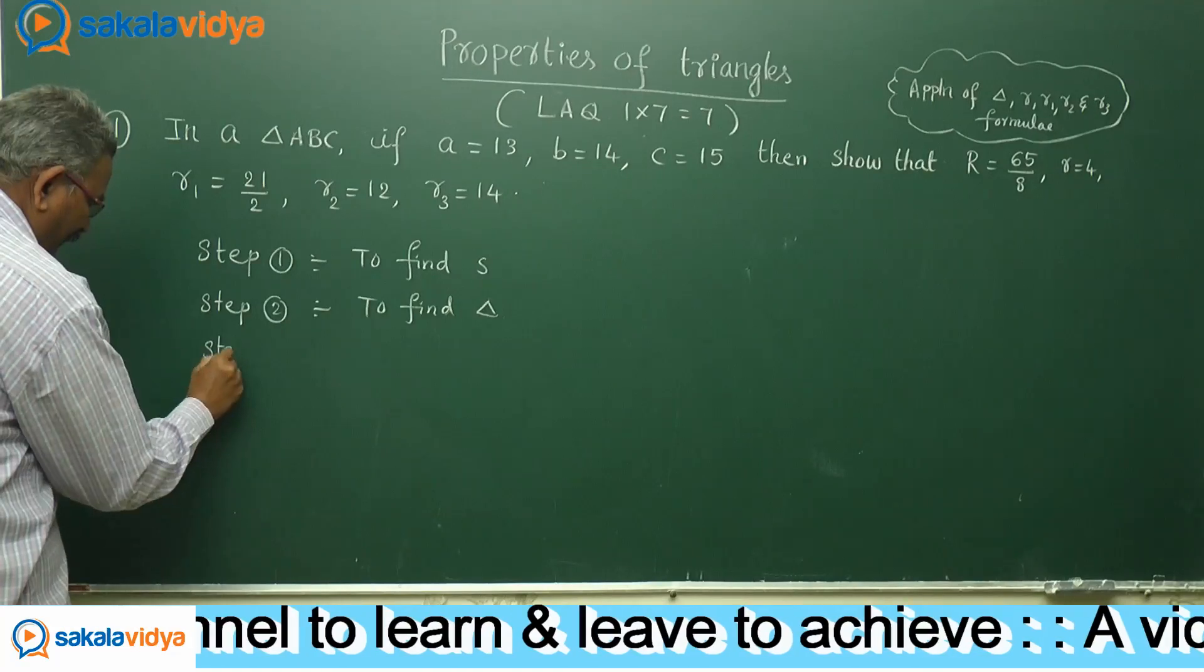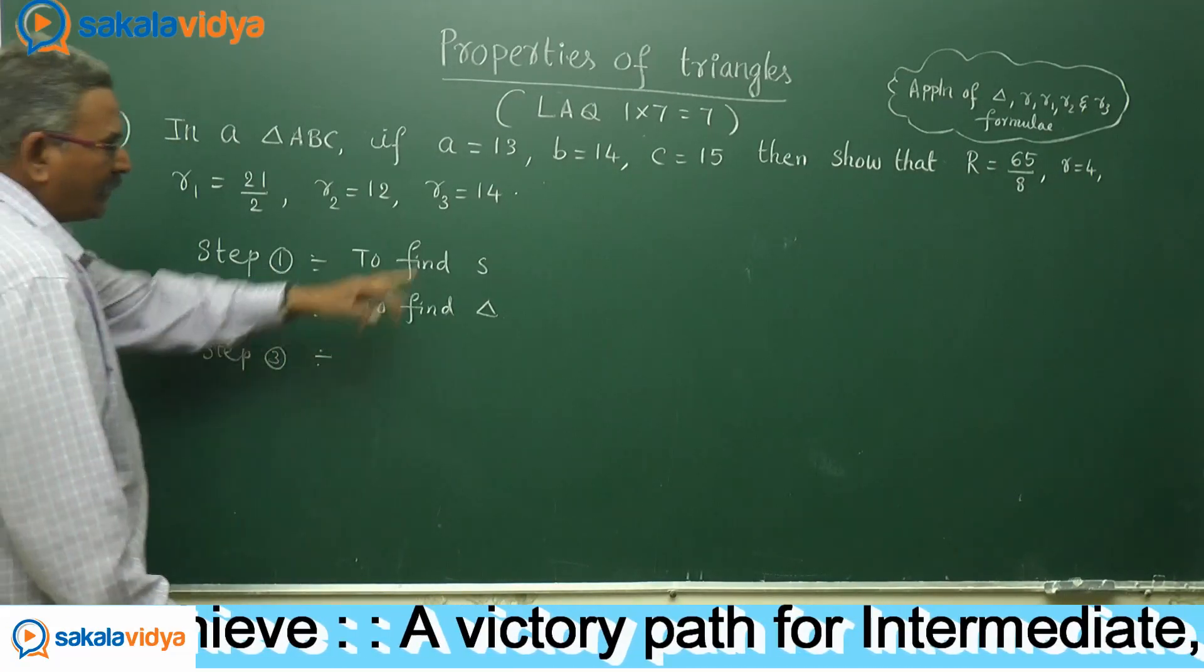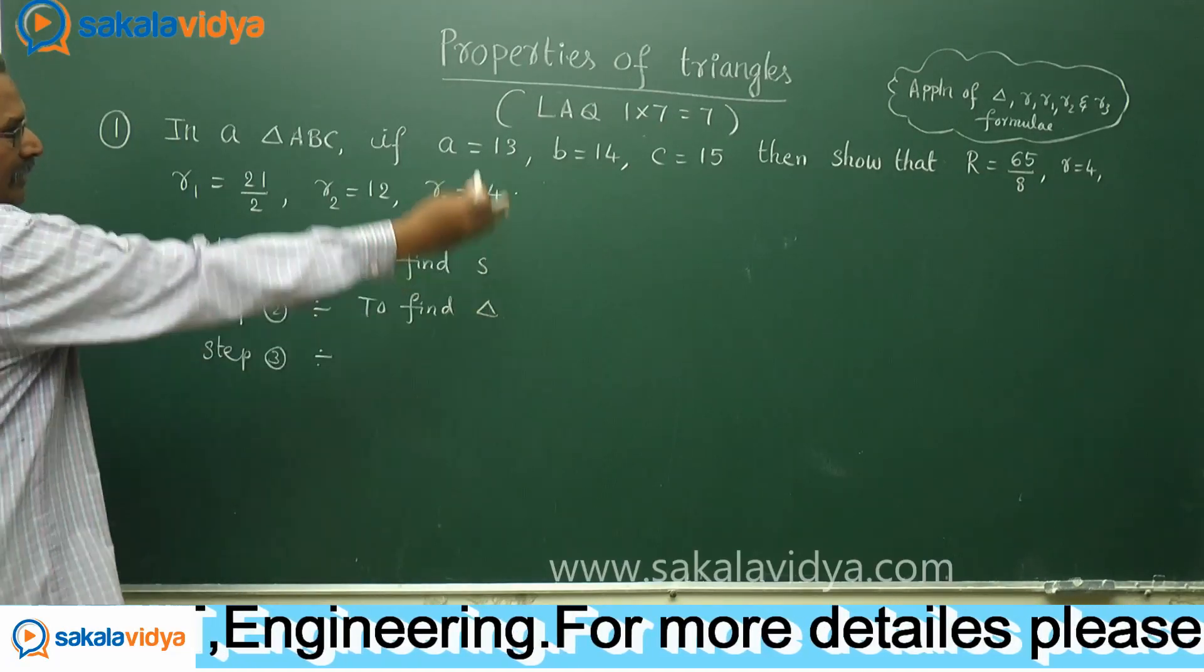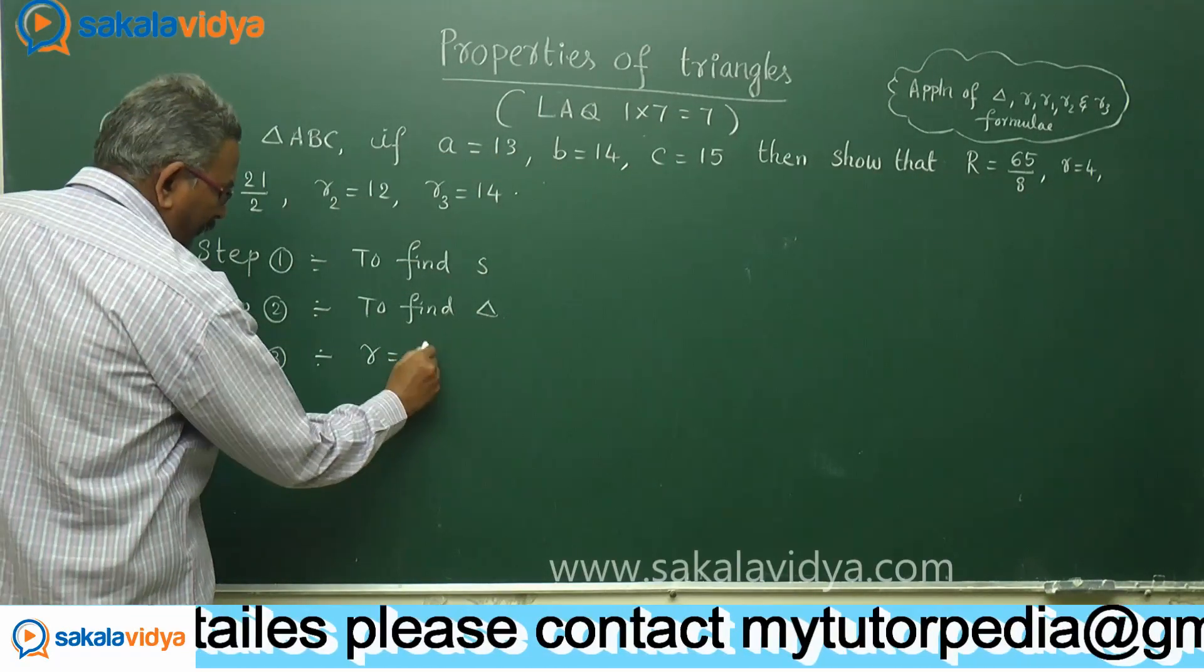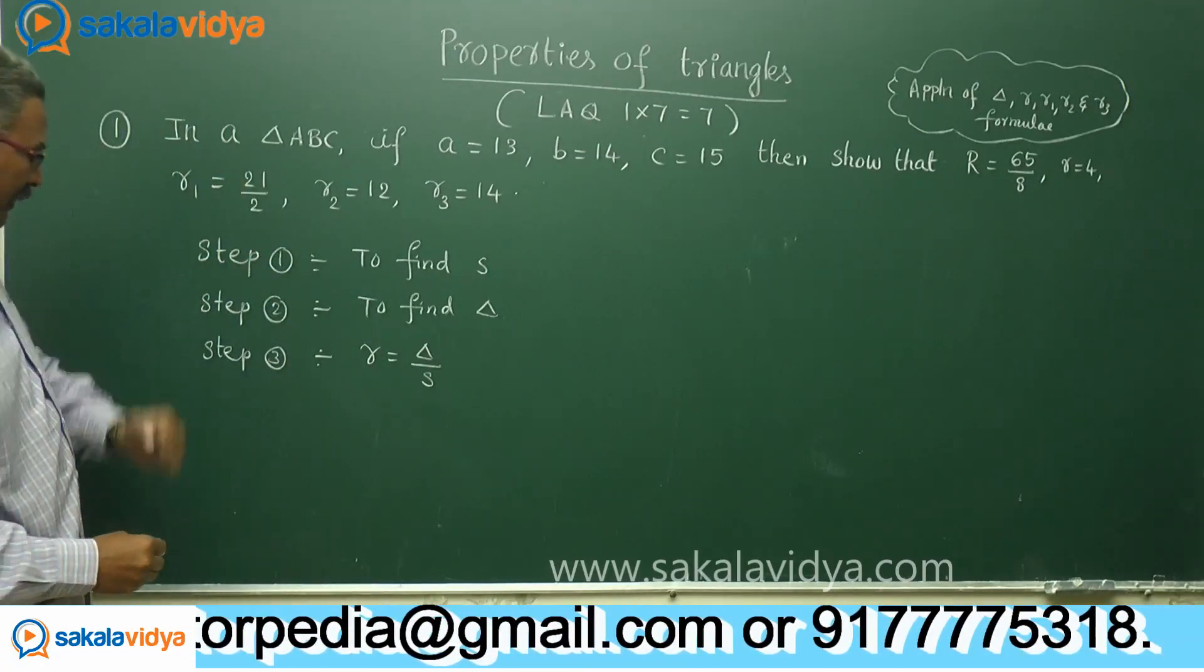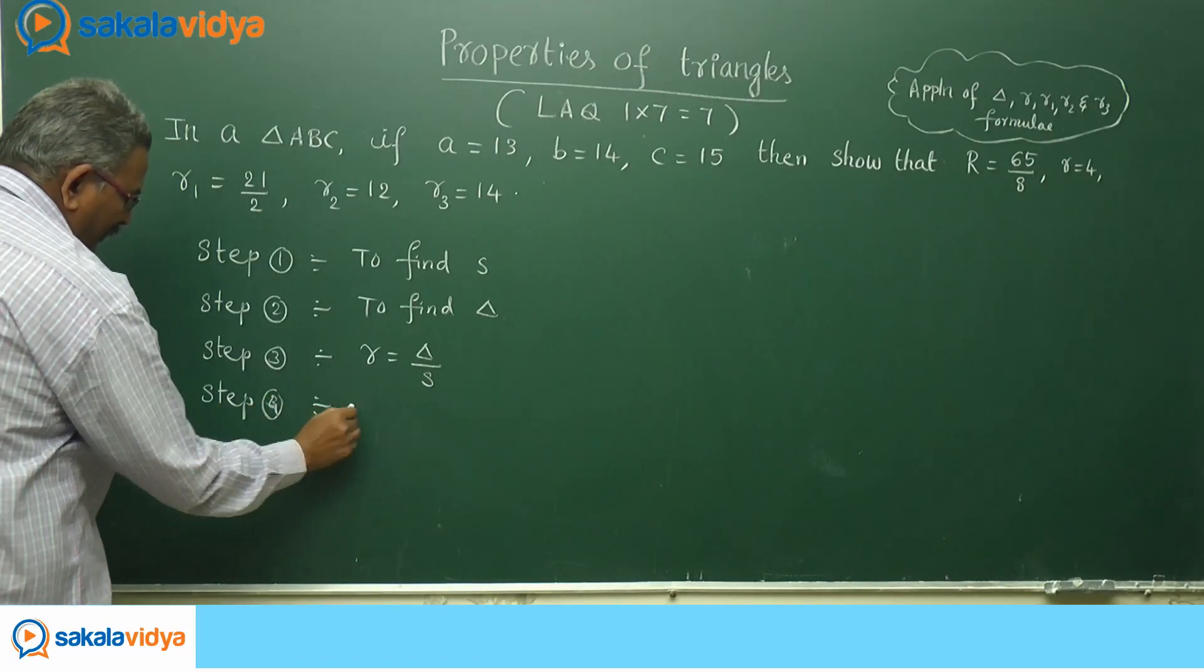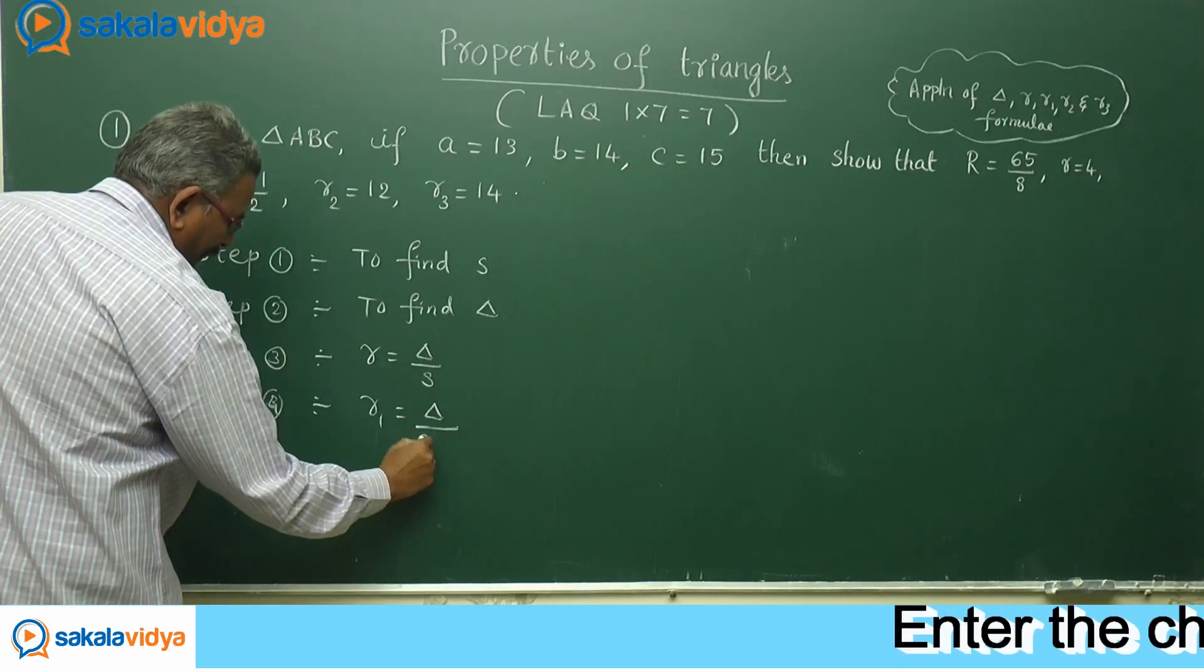Step 3, after finding this S value and delta value, we have to find out small r value. Small r is equal to delta by S, using this formula small r can be evaluated. Step 4, that is R1 is equal to delta by S minus A.